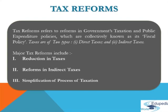Next we come to tax reforms. Tax reforms refer to reforms in government taxation and public expenditure policies, which are collectively known as fiscal policy. Taxes are of two types. First is direct taxes, which consist of taxes on income of individuals as well as profits of business enterprises — for example, income tax on individual income and corporate tax on profit of companies. Second is indirect taxes, which refers to those taxes that affect income and property of persons through their consumption expenditure — for example, sales tax, VAT, and custom duty.